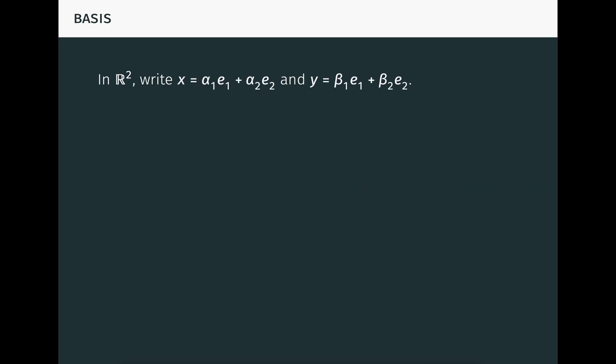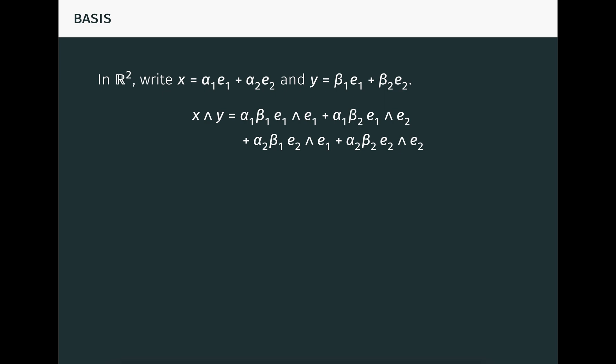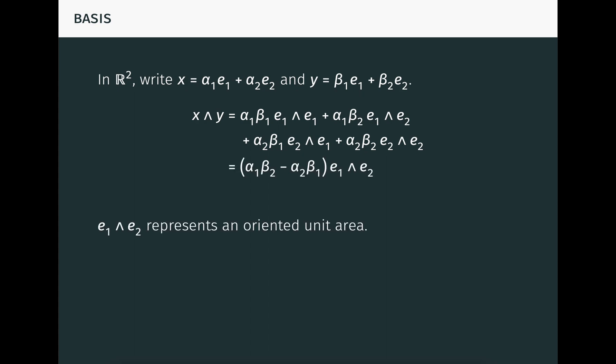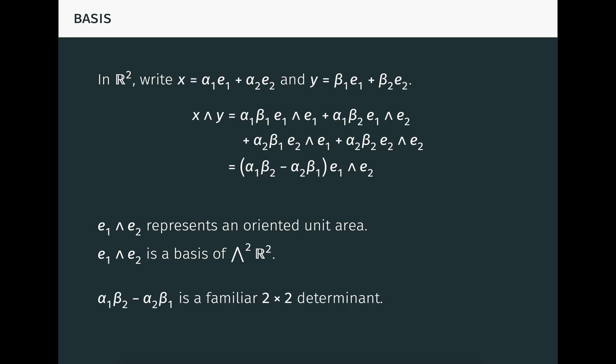It also follows from the alternating property that permuting the vectors in a blade is equivalent to multiplying the blade by the sign of the permutation. This property, called skew symmetry, is logically equivalent to the alternating property for a multilinear map when the characteristic of the scalar field is not equal to 2. To get a feel for these properties, in the plane R2, write the vector x with scalar coordinates alpha1 and alpha2, and the vector y with scalar coordinates beta1 and beta2, relative to the standard basis vectors. Then multilinearity of the exterior product means that x wedge y expands in the standard way. The alternating property means that e1 wedge e1 is zero, and e2 wedge e2 is also zero. In the third term, e2 wedge e1 is just minus e1 wedge e2. So this reduces accordingly, and e1 wedge e2 represents an oriented unit area in the plane, and this calculation shows that it's a basis of wedge 2 R2.